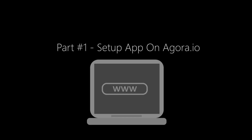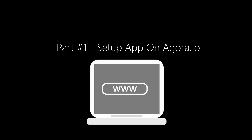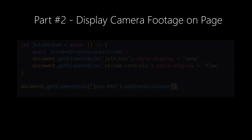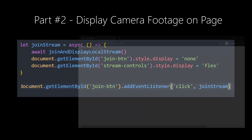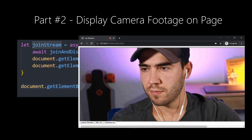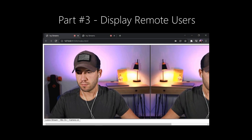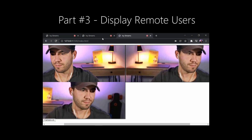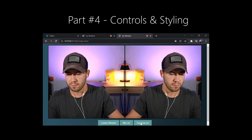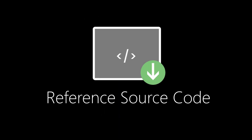Let's briefly summarize how this video will go before we get started. First we will create an account on agora.io where we'll need to set up an app and get credentials such as a token, app ID, and channel name. Then we will create a folder containing some HTML, CSS, and JavaScript along with the Agora SDK. The source code for this project will be linked in the video description.